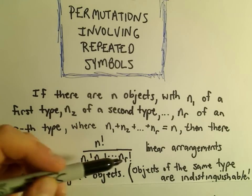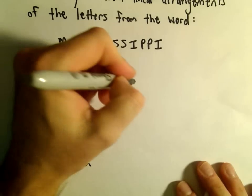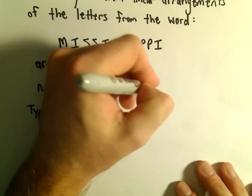Then there are n factorial over n sub 1 factorial times n sub 2 factorial up to n sub r factorial all being multiplied. We get that many linear arrangements of the n given objects. Again, objects of the same type are indistinguishable.